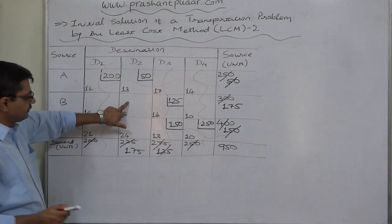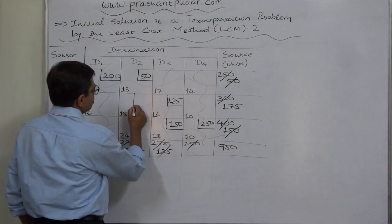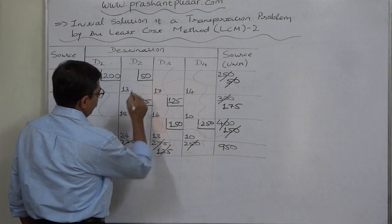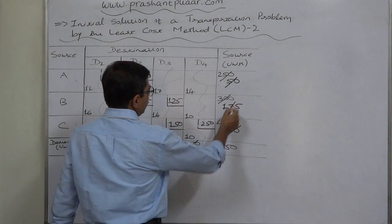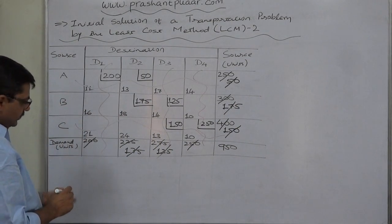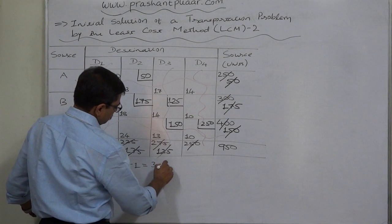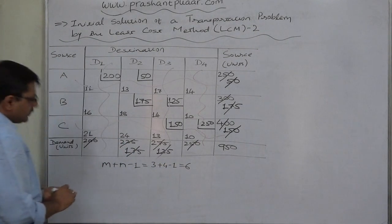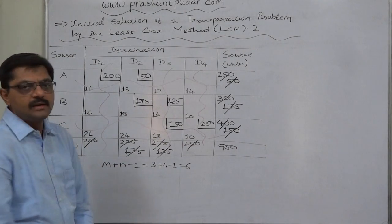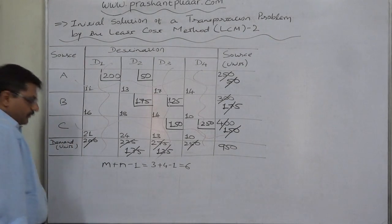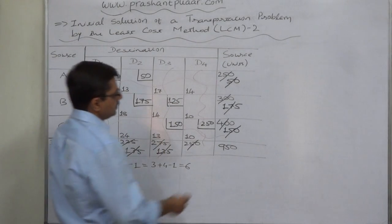Now only one open cell remains, B-D2, with a cost of 18. Demand is 175 and supply is 175, so the last allocation is 175 units. With this, demand of D2 is satisfied and supply from B is exhausted. Checking the M+N rule: counting cells with allocation — 1, 2, 3, 4, 5, 6 — this is a non-degenerate initial feasible solution.